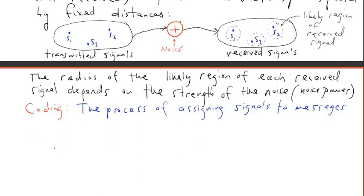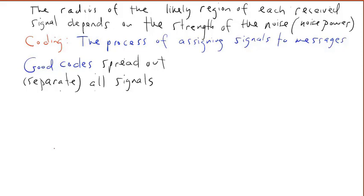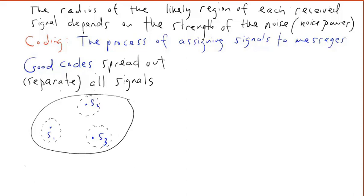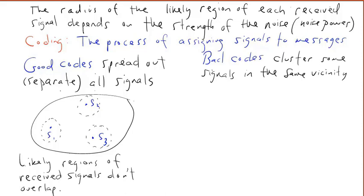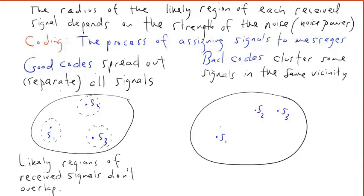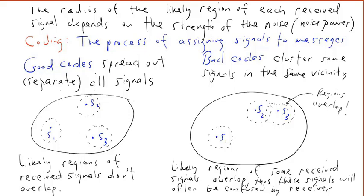An important part of communication system design is coding — the process of assigning signals to messages. Good codes spread signals out in signal space by as much distance as possible, so the likely regions of received signals don't overlap, allowing the receiver to reliably identify which message was sent. Codes that aren't good cluster signals in the same vicinity of signal space. For example, if signals two and three are separated by a very small distance, their likely regions overlap, and the receiver will often confuse message two with message three.